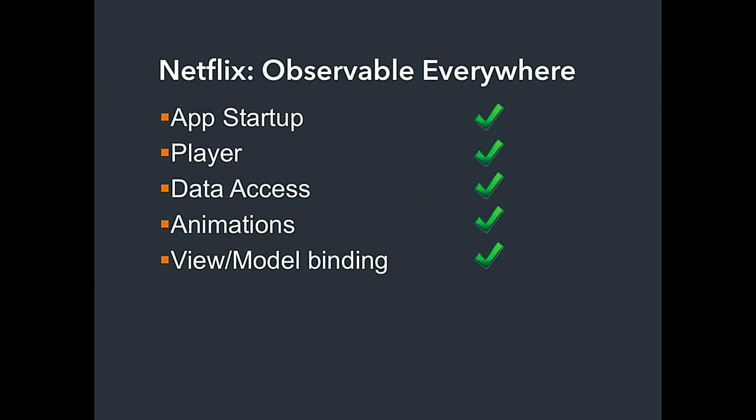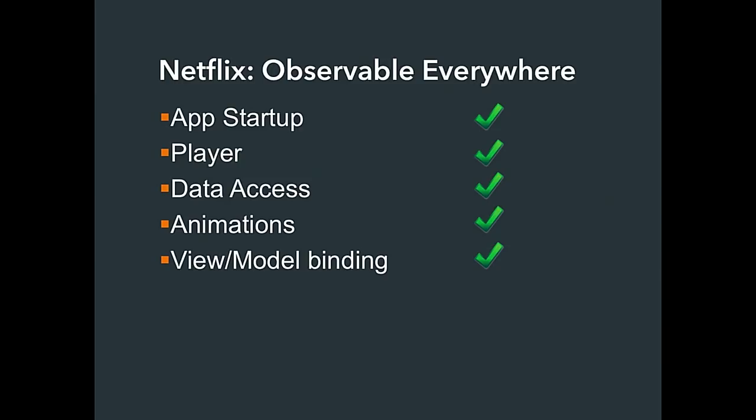At Netflix we use Observable for pretty much everything — everything asynchronous on the client, but also everything on the middle tier. When you click a button in Netflix, a request goes to a server, gets turned into an observable of one, we request data from the back end as observables, combine them all into one big observable, forEach over it, and send the data out over a stream. Netflix's middle tier code is nothing but observables — building one big observable, foreaching over it, and pushing data down the stream. Mutation happens at the edges; in the middle it's nothing but map, filter, reduce, merge, zip.